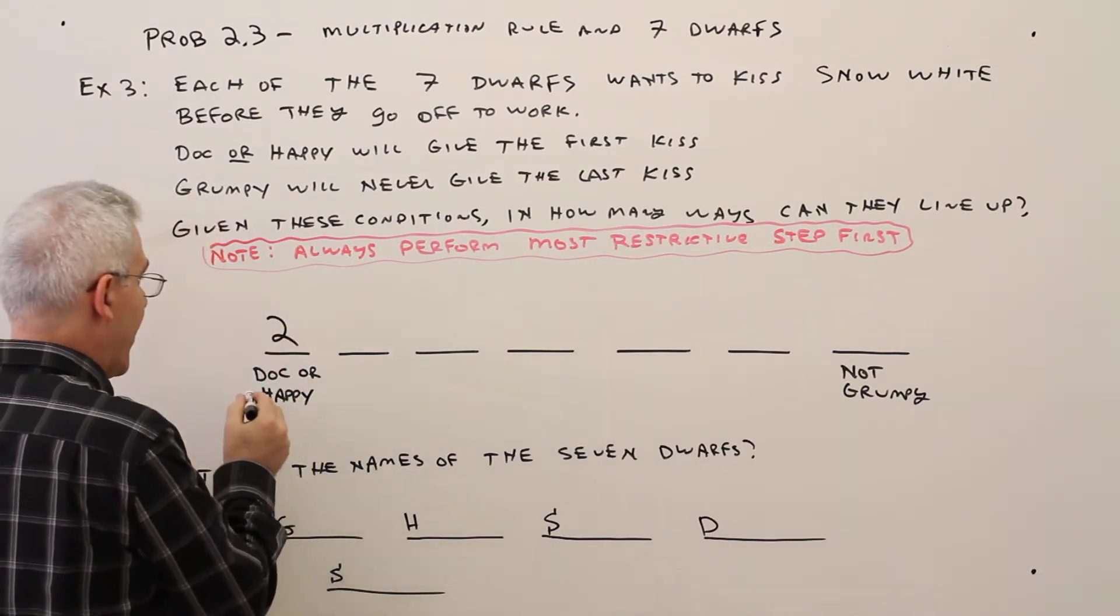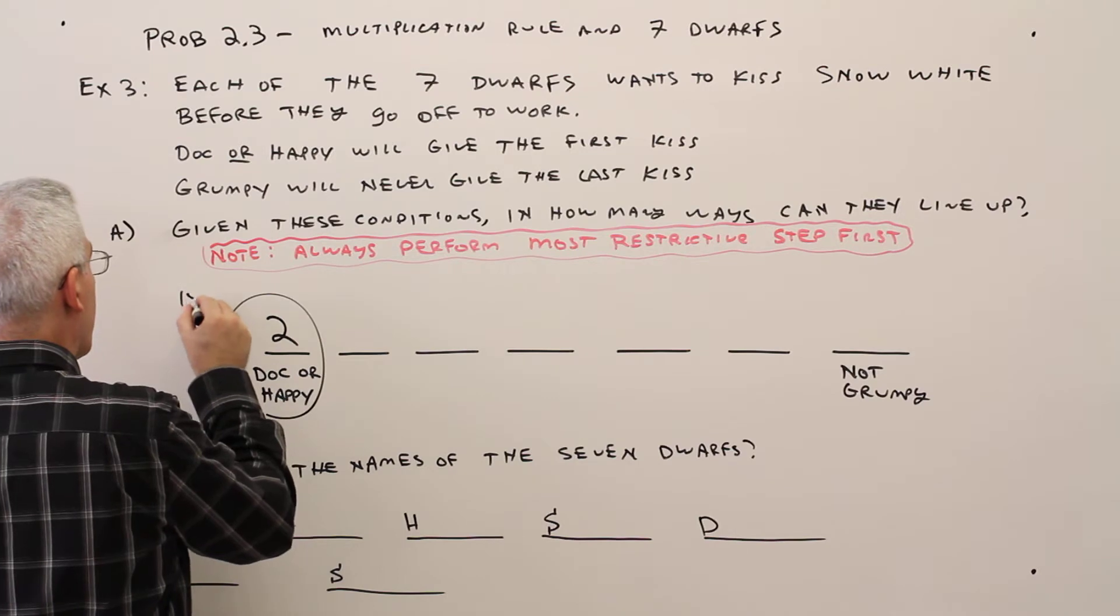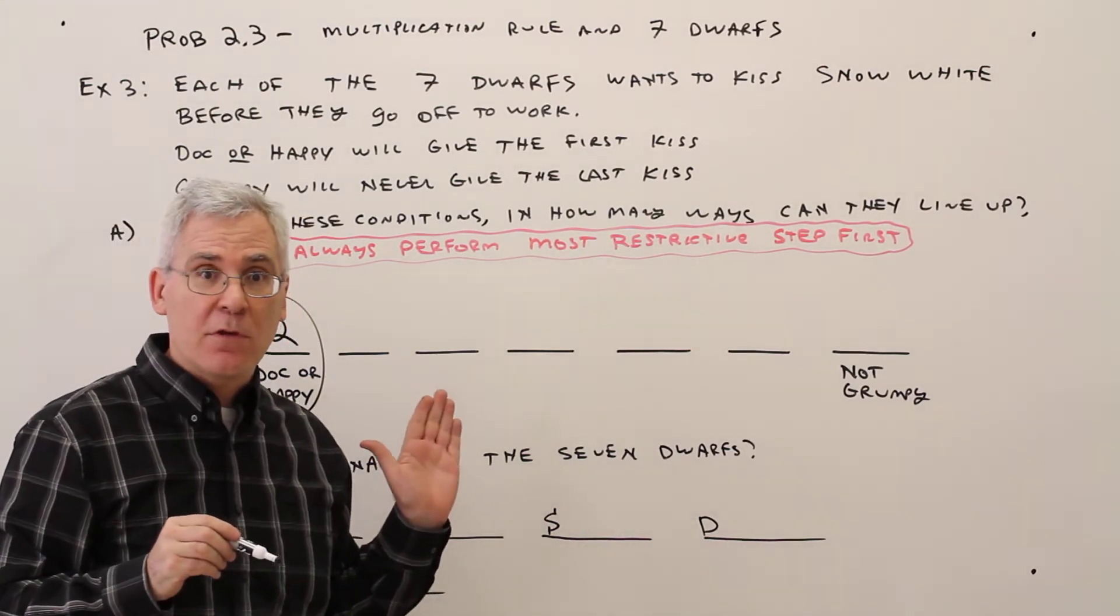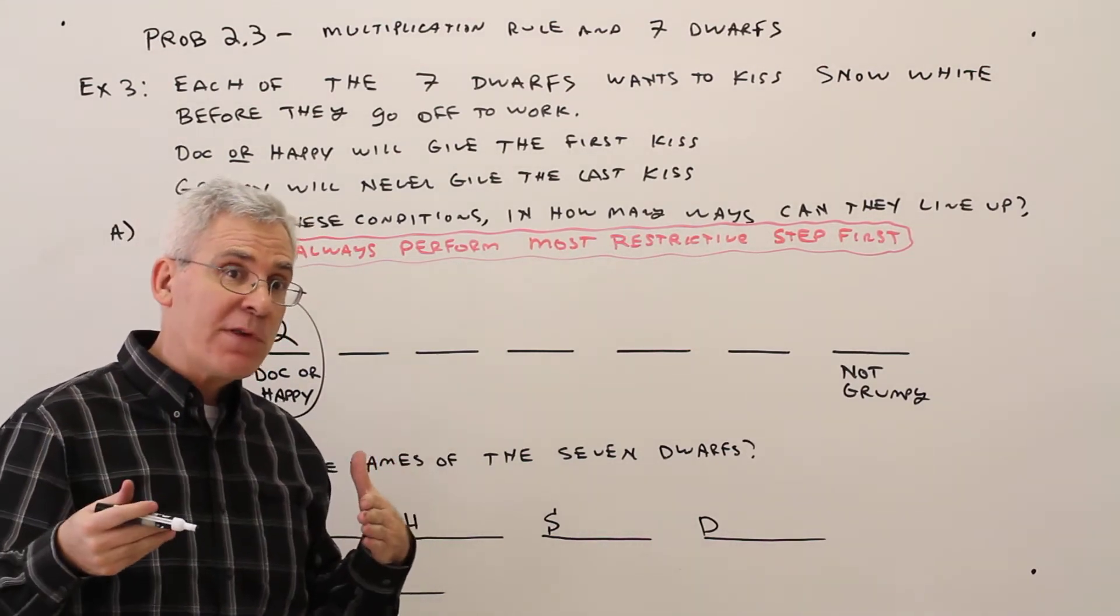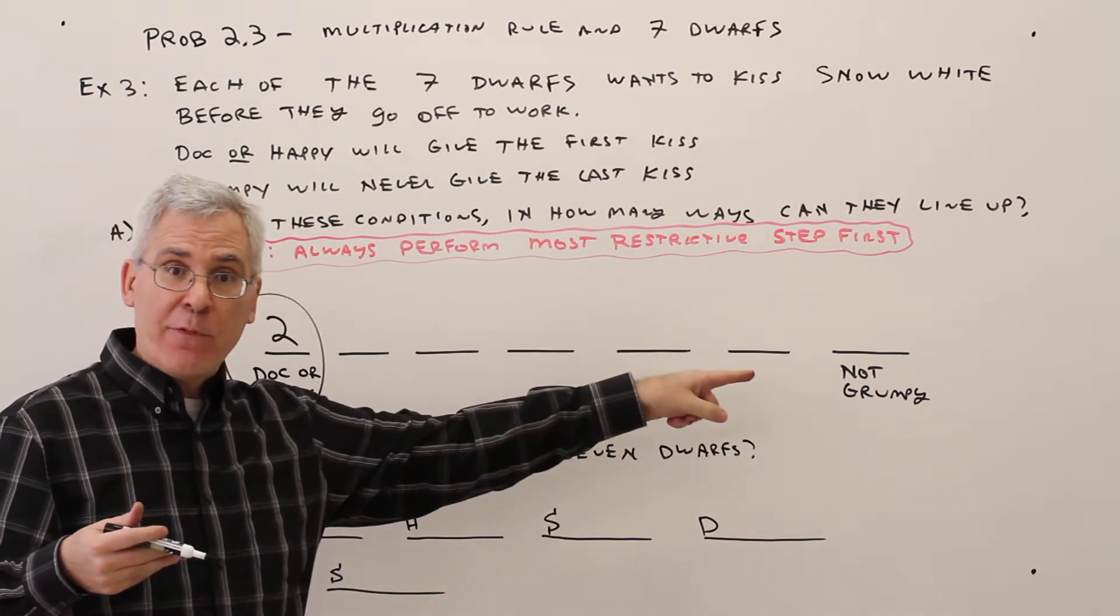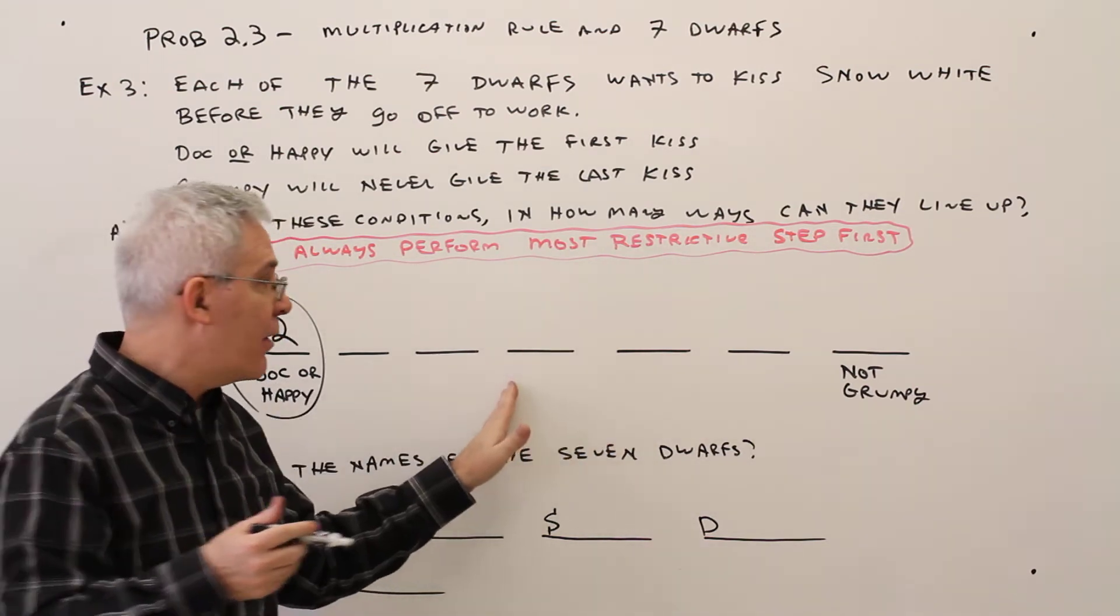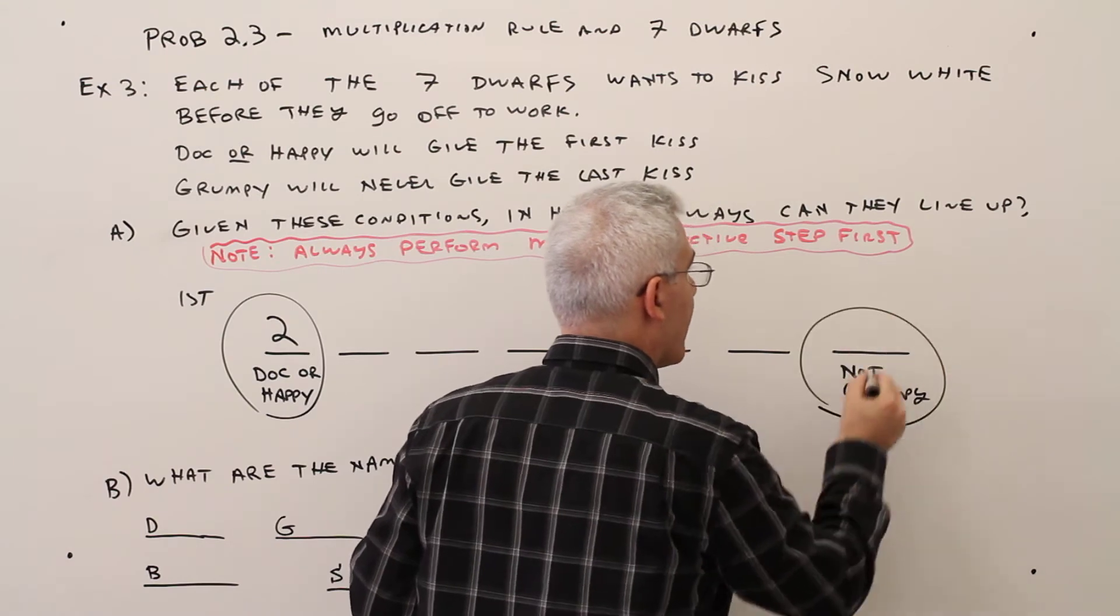Just be Doc or Happy. So once again, we're choosing to perform that first. What's the next most restrictive step? This one over here. There's no restrictions over here. So I'm going to perform this step second.